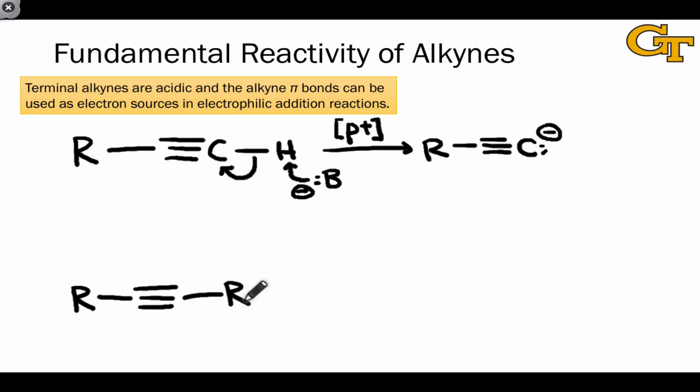Terminal or internal alkynes can engage in the second general reaction type, which is electrophilic addition to the alkyne pi bond. This is analogous to the corresponding process in alkenes and may give rise to alkenyl or vinyl cation intermediates or avoid carbocations through concerted mechanisms.